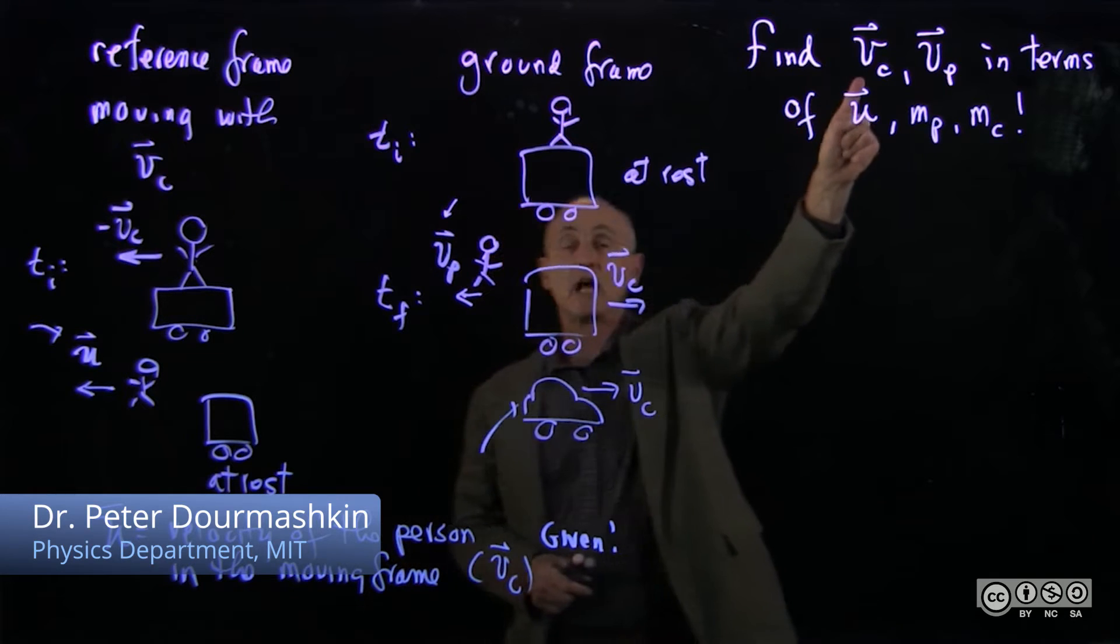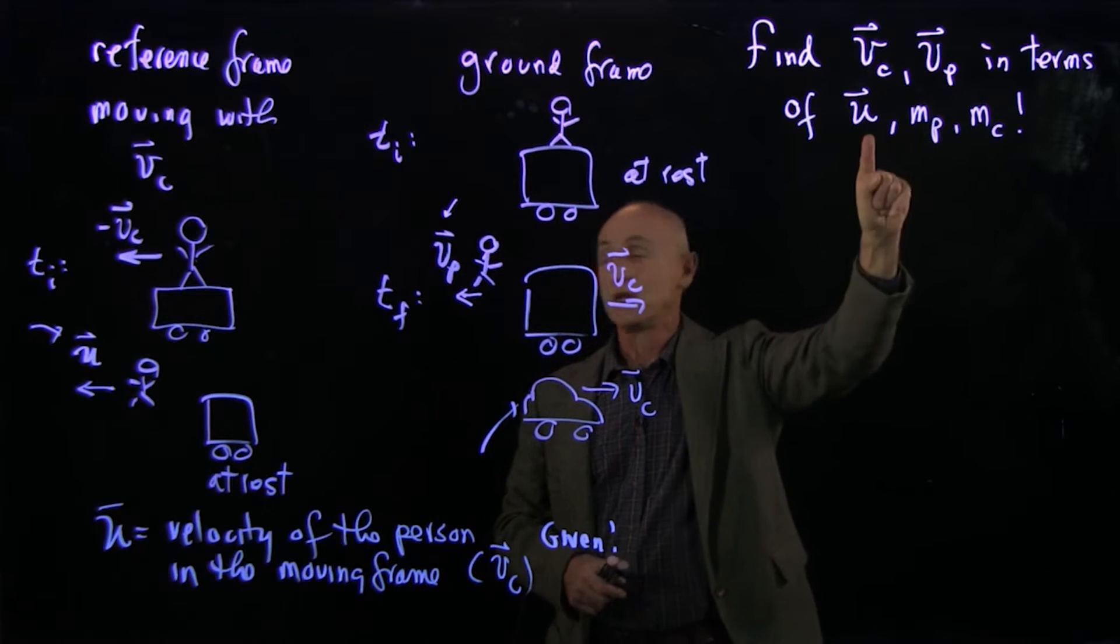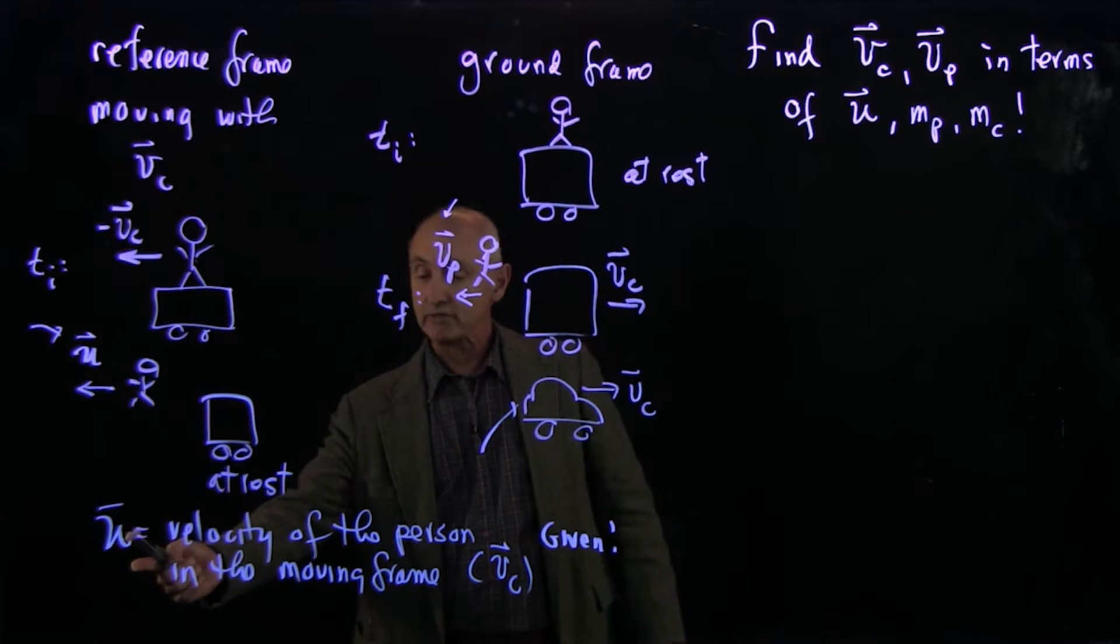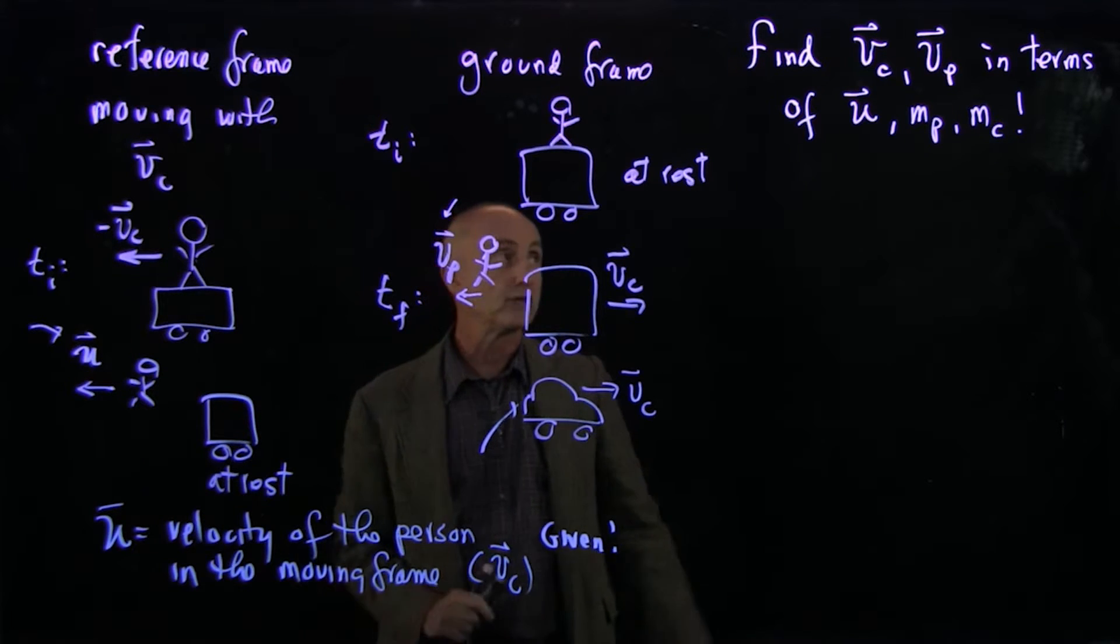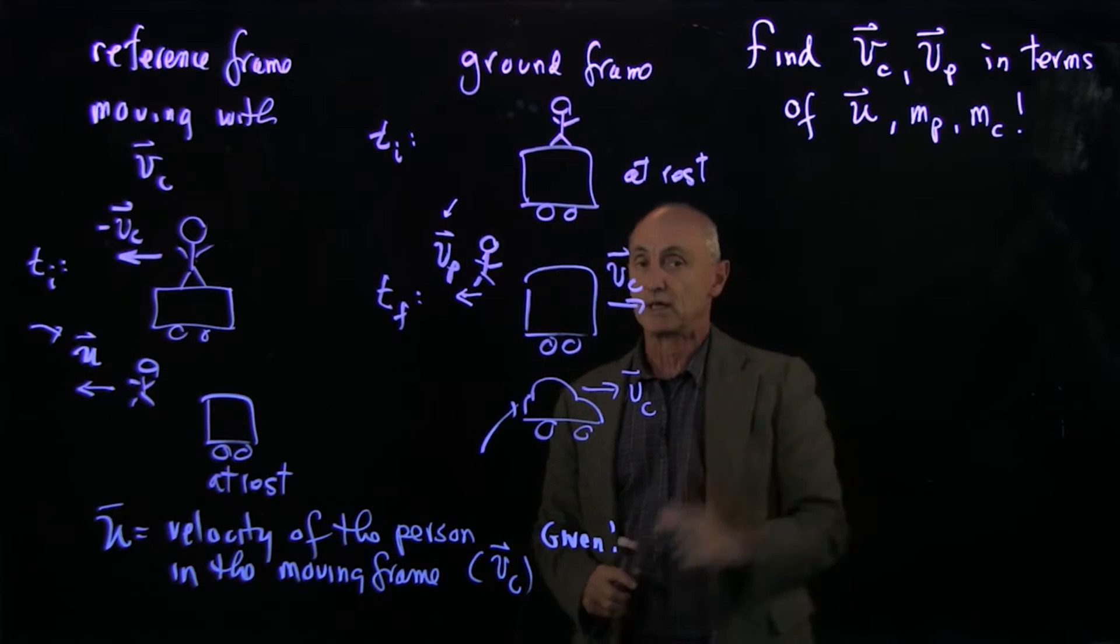We've been trying to find the velocity of the cart and the velocity of the person in terms of the relative velocity of the person jumping in the reference frame of the moving cart, the mass of the person, and the mass of the cart.